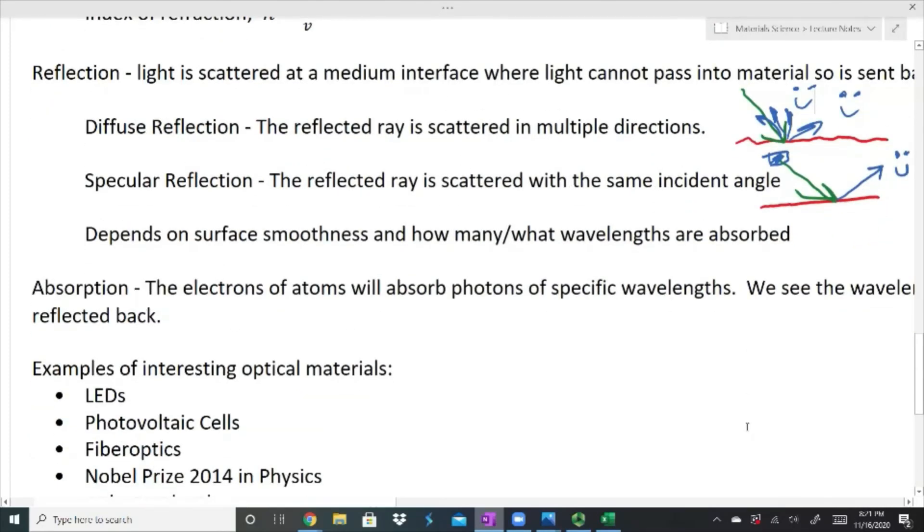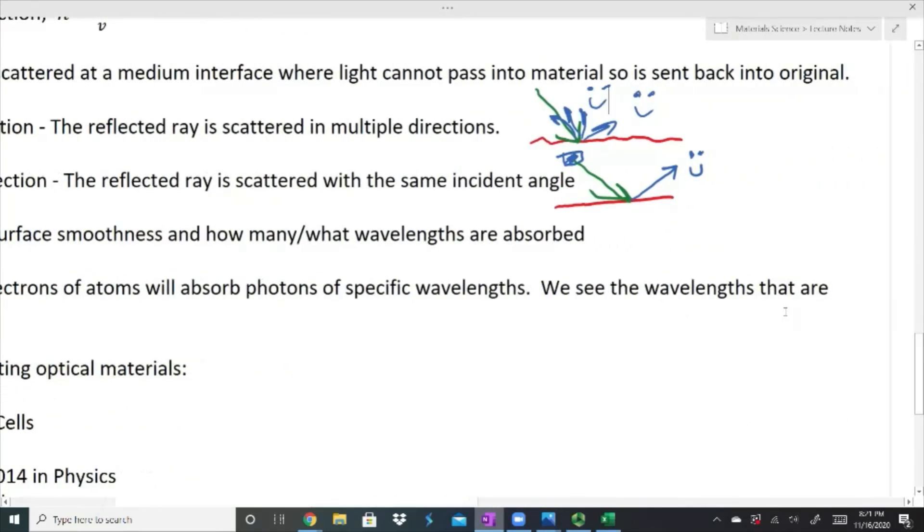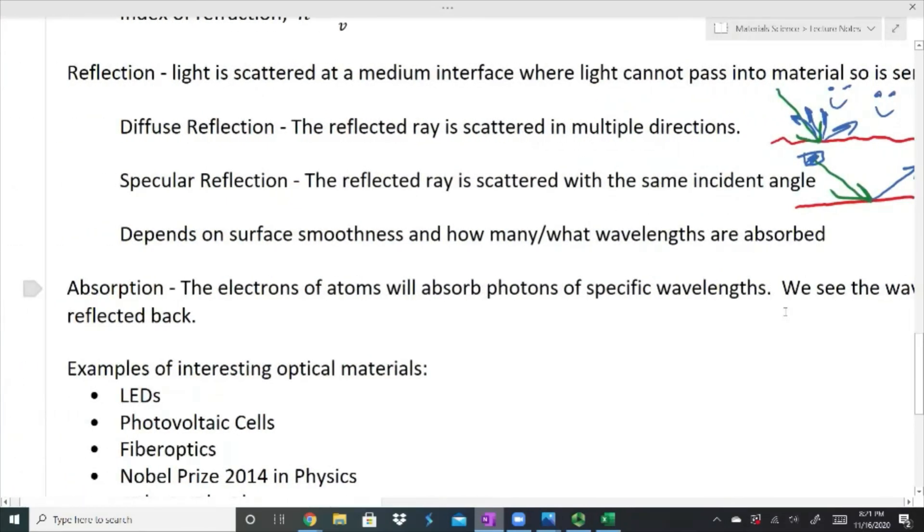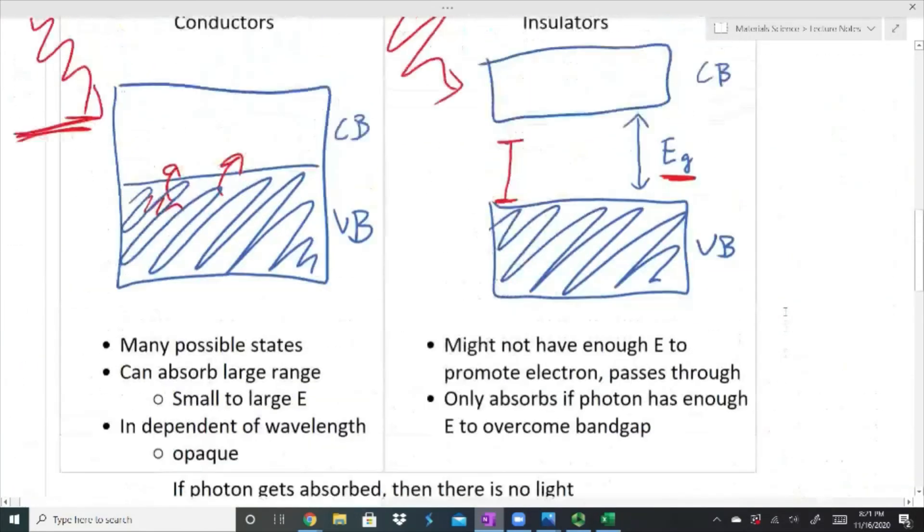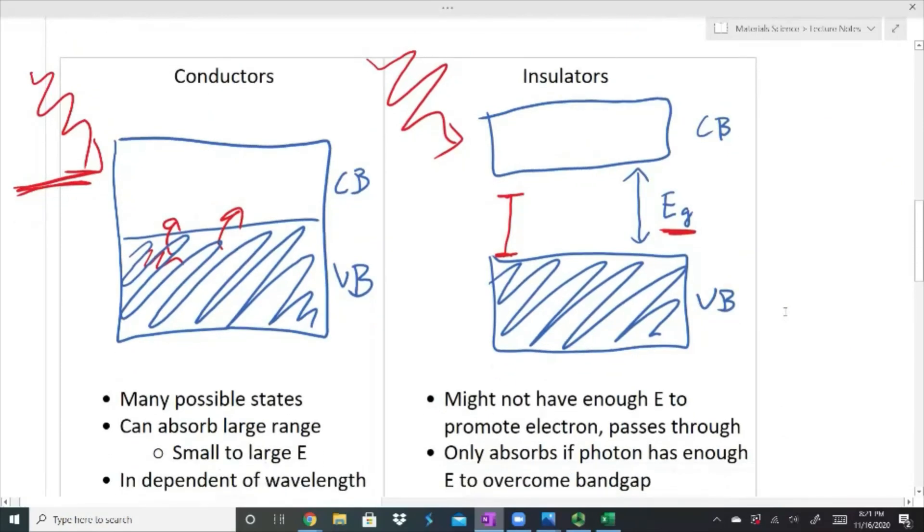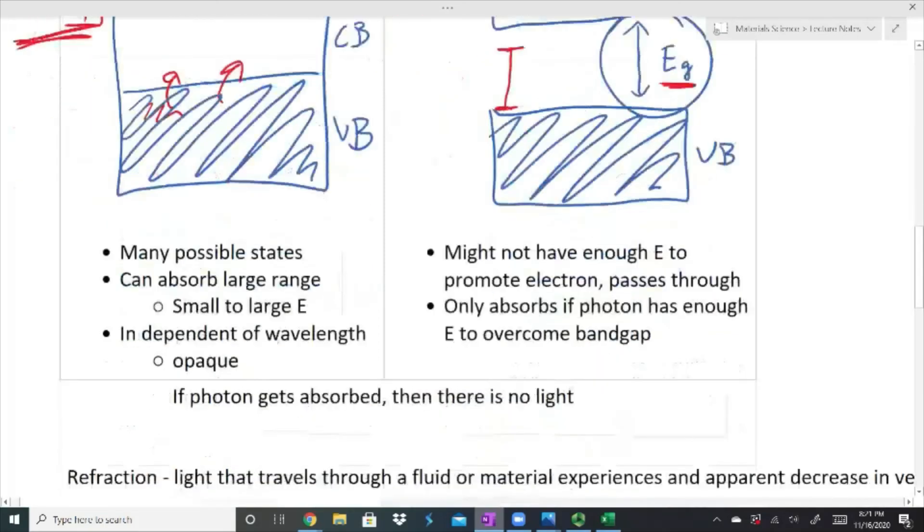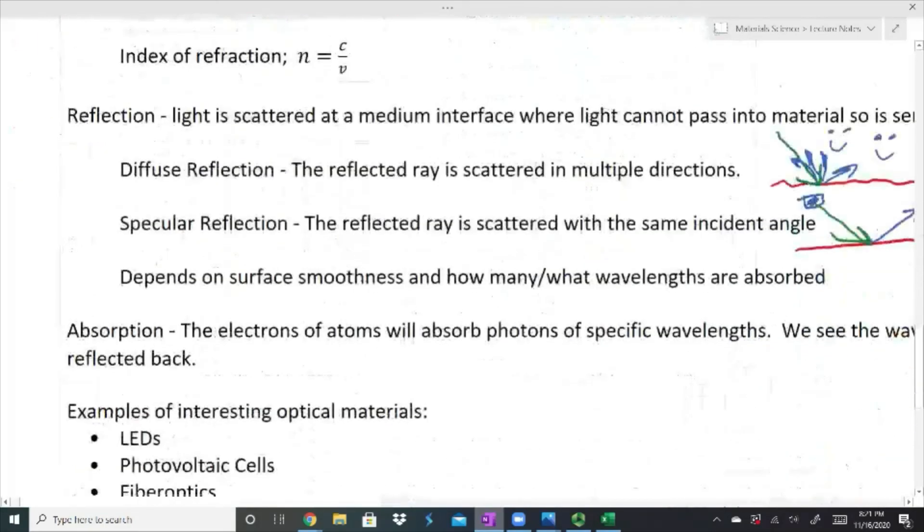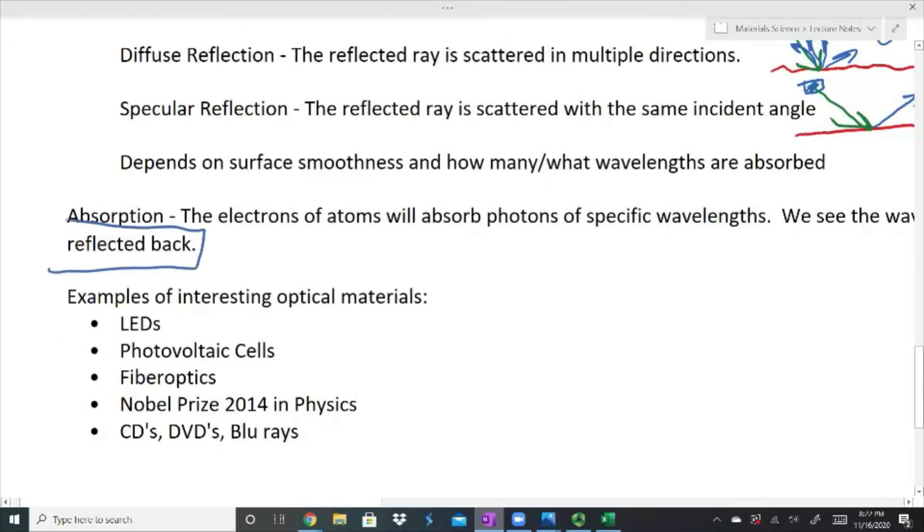Getting into that, what is absorption? Absorption is when the electrons of atoms will absorb photons of specific wavelengths. We see the wavelengths that are reflected back. That again comes back up to this picture. There are some wavelengths that will be absorbed depending on if it's able to absorb that energy or not, that photon. And in some cases, there are going to be some wavelengths that get bounced back. And that's why we see certain colors. So whatever is reflected back is what we see.